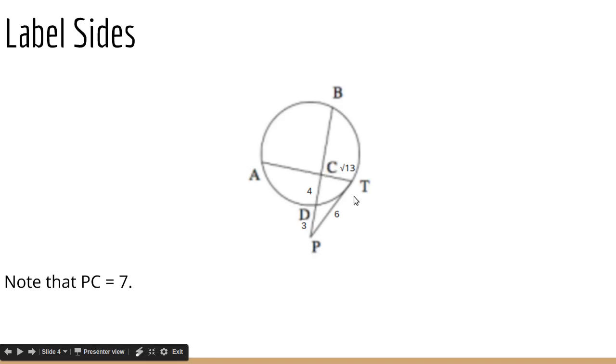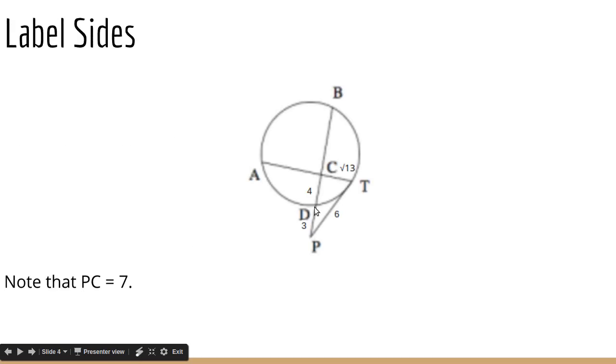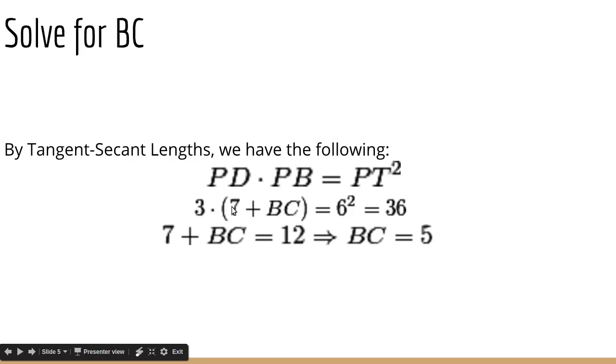The first thing that you should really notice is that we have this tangent segment, and we have this secant segment coming off of the same point, and because of that, we can use our tangent secant length theorems to find the length of PB. And then if we say PB is 7 plus BC, we can use that to find BC, and that'll give us another side to work with. So we have PD times PB, that's this whole secant, equals PT squared, which is the tangent squared. So PD is 3, PB is 7 plus BC, and PT is 6.